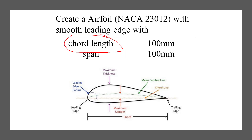The chord length is the dimension of the airfoil — the distance from the leading edge to the trailing edge. The span is the amount we will be extruding for the airfoil. Our main task is first to create a cross-section of NACA 23012, which we can then extrude.